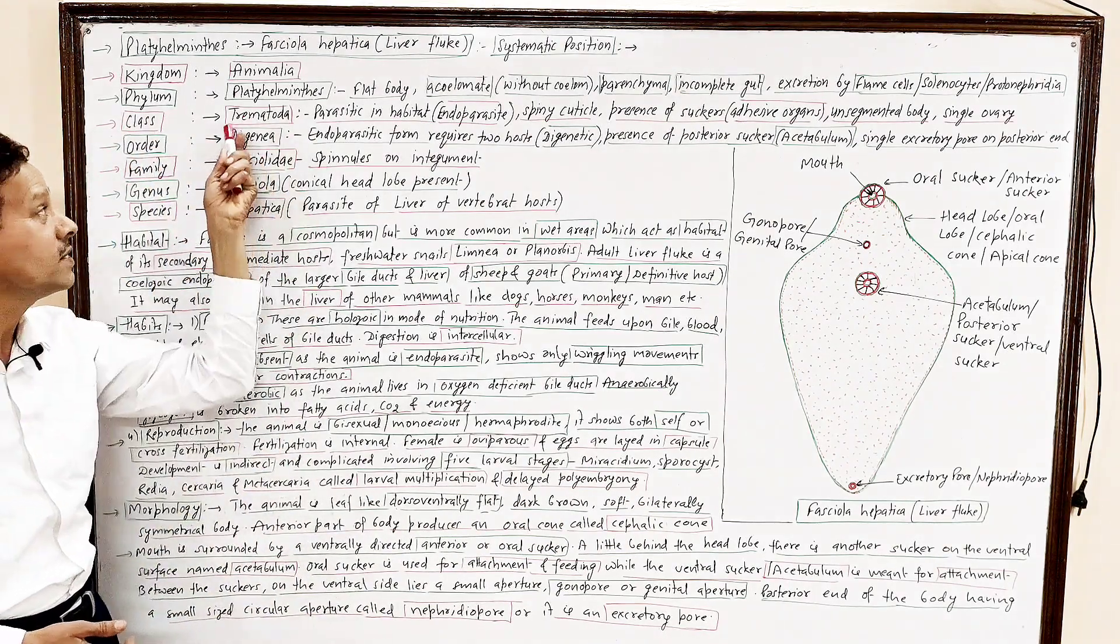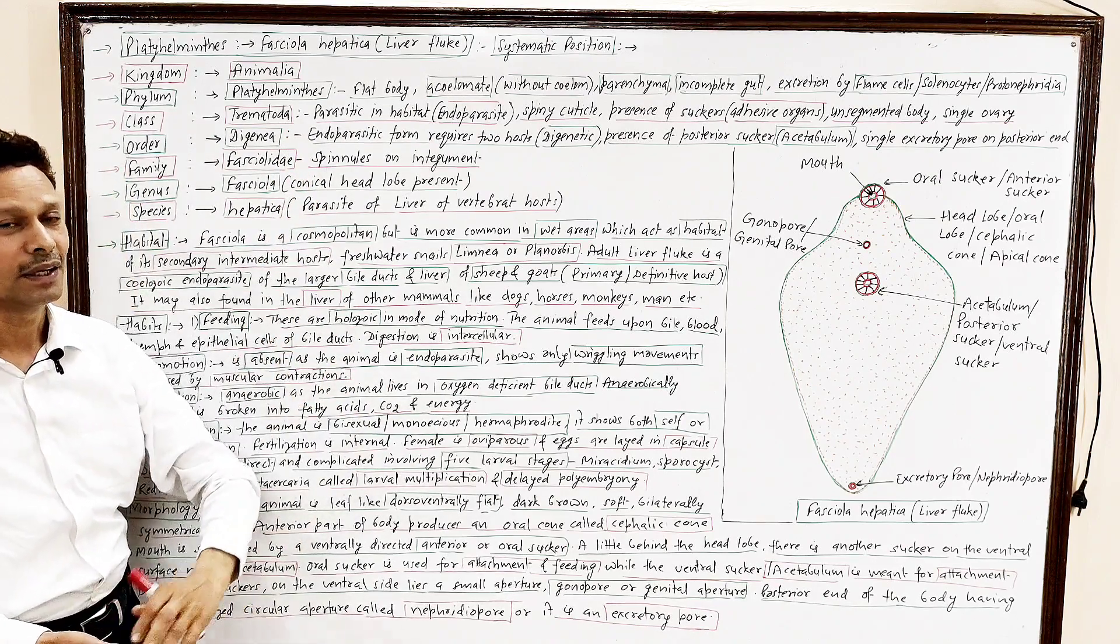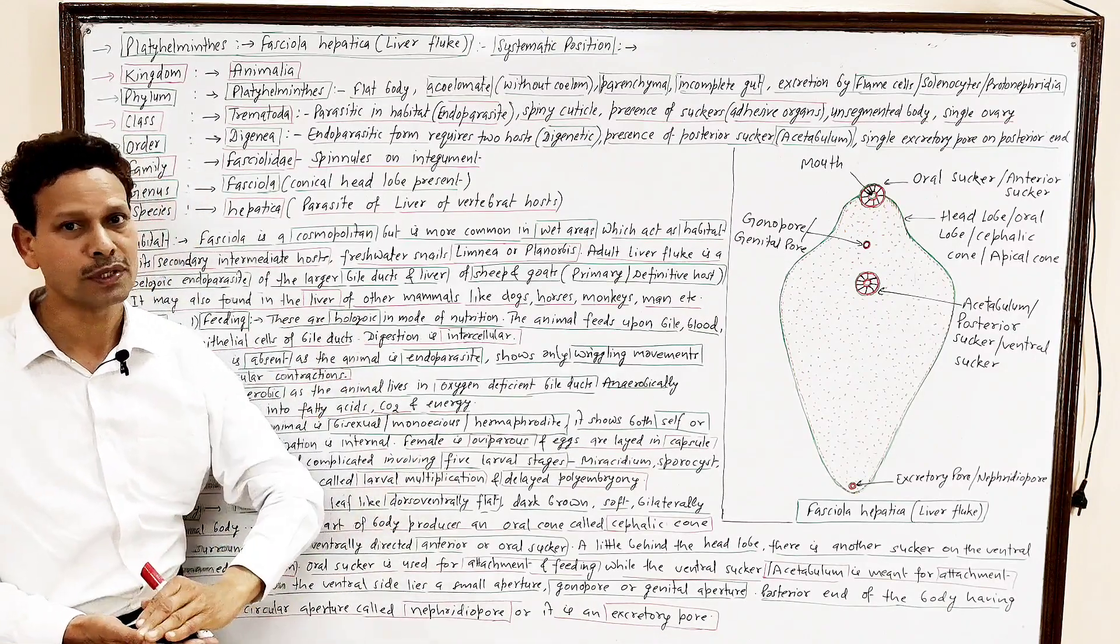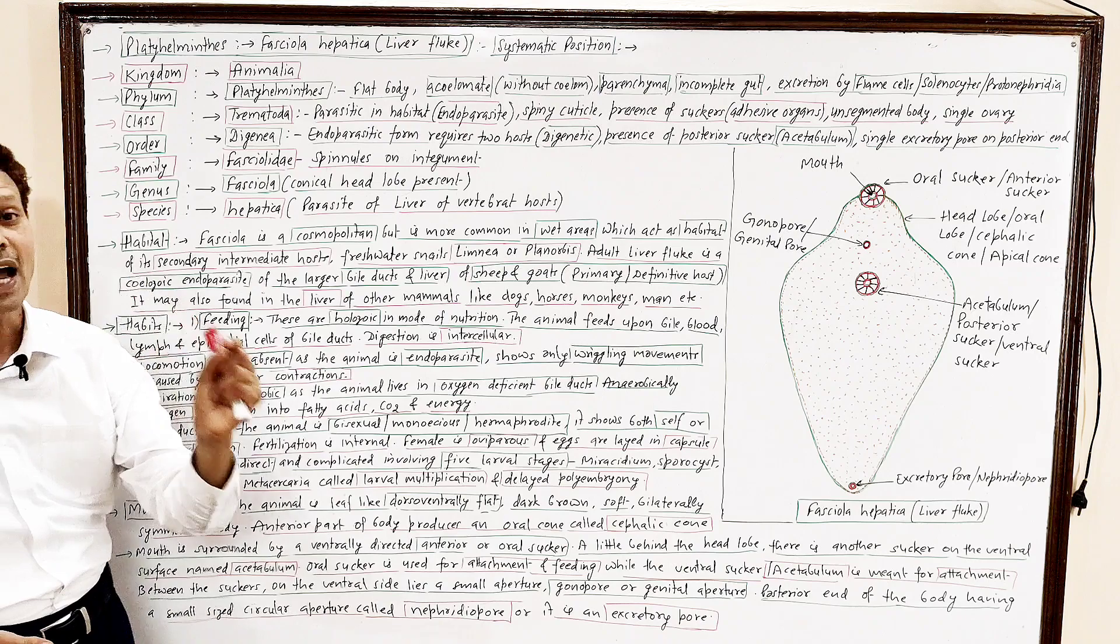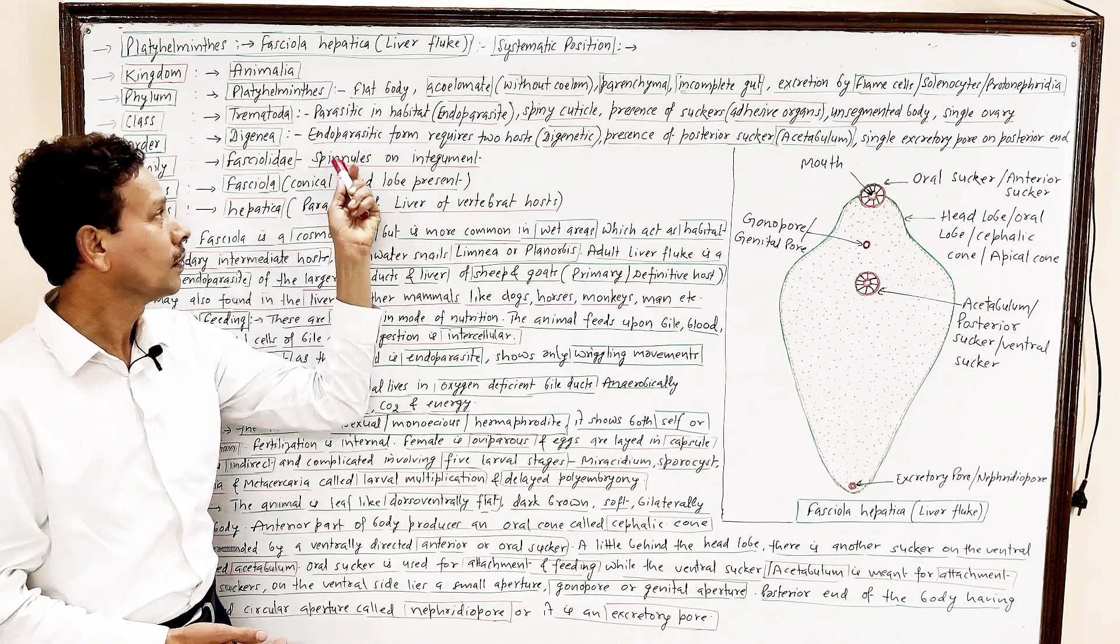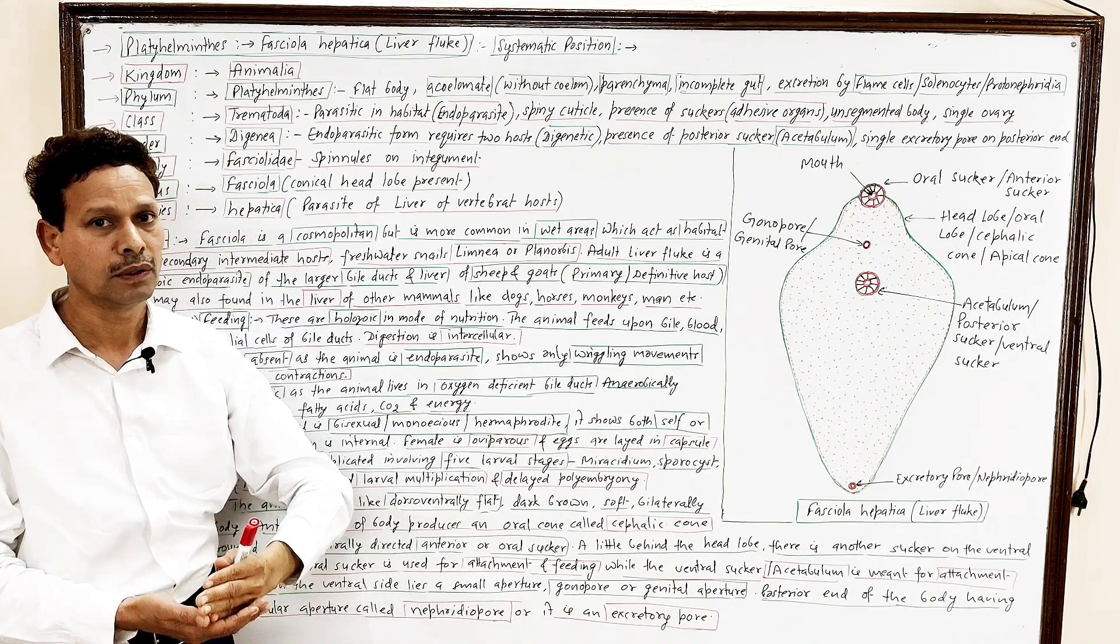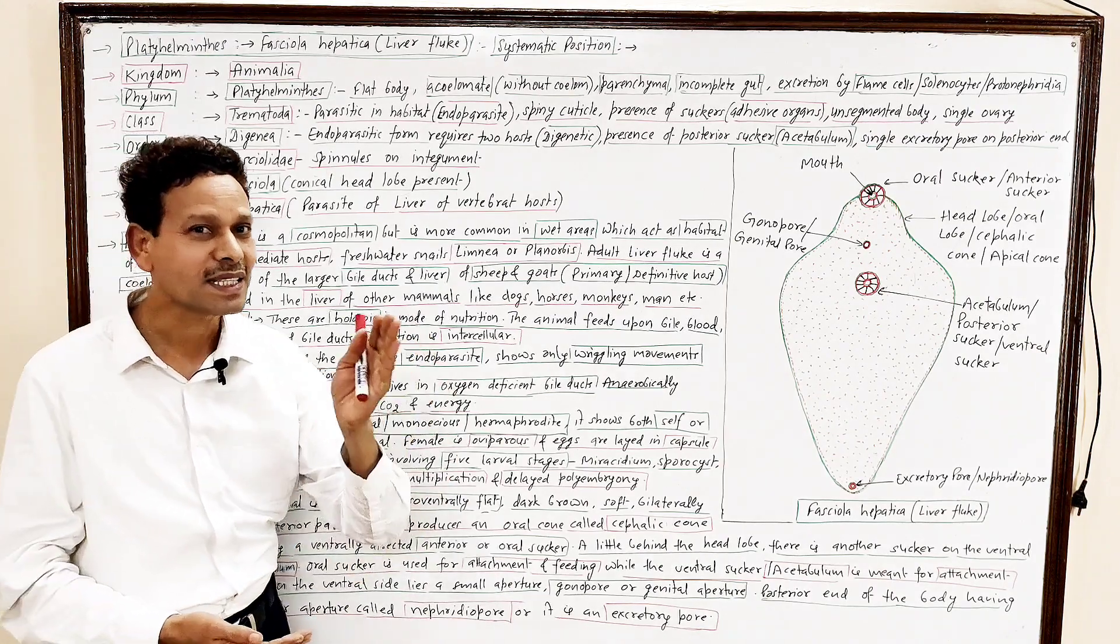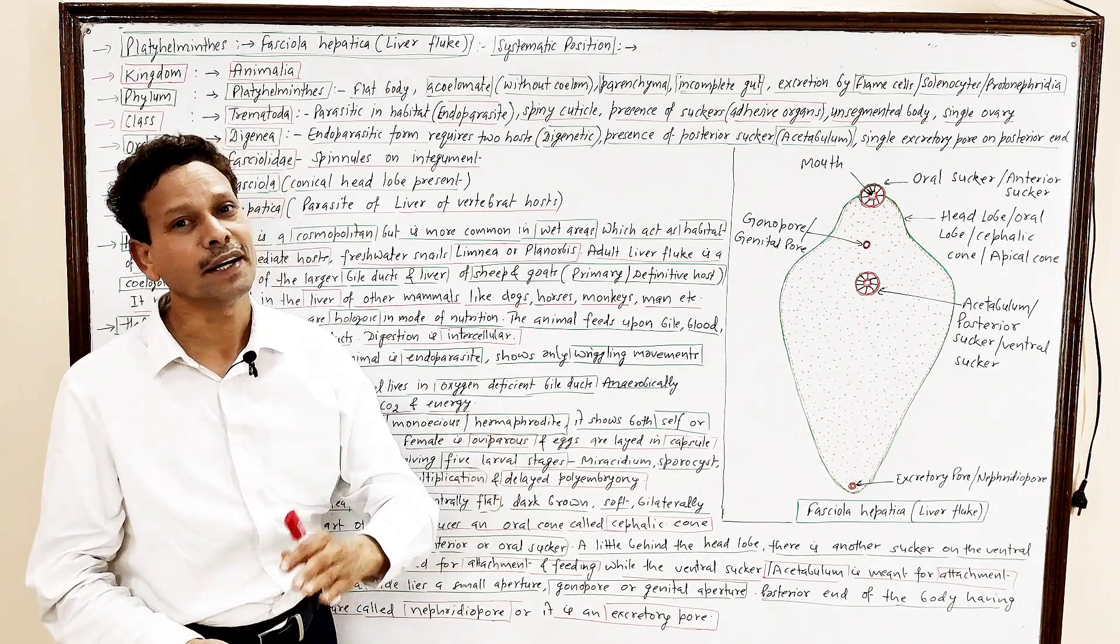Order is Digenea. It means this endoparasite, it requires two hosts. The life cycle completes in two hosts. The life cycle is digenetic. Dear students, the life cycle is digenetic, and this endoparasite requires two hosts. One is primary host, the sheep and goats. These are generally primary hosts. While the snails, the mollusks, Limnaea, that is secondary, intermediate hosts.